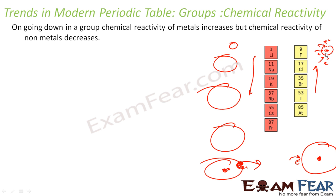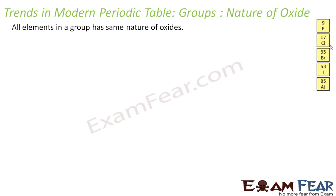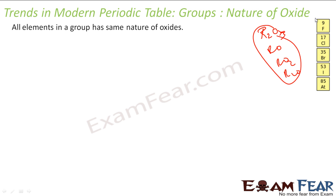Regarding the nature of oxides, all elements in a group have the same nature of oxides. You may have seen this in Mendeleev's classification as well — the way he grouped elements was based on the nature of oxides: R2O3, RO, RO2, R2O. All elements in a particular group have the same nature of oxides. Here also, they have the same nature of oxides because the nature of oxides depends on the electronic configuration — the number of electrons in the outermost shell is the same, so the nature of oxides is also the same.